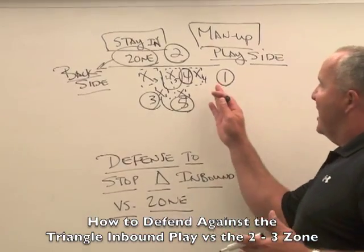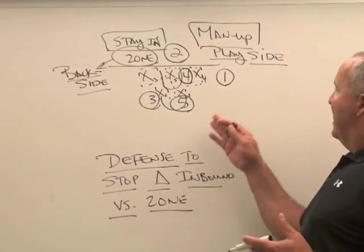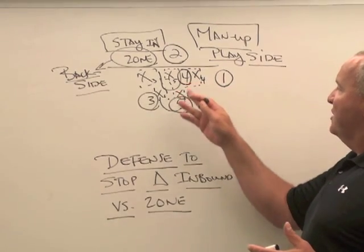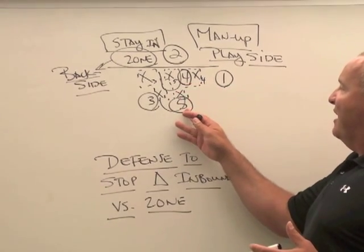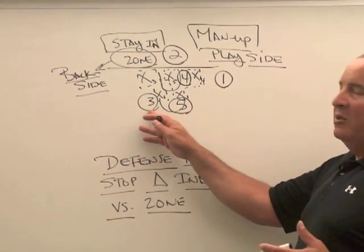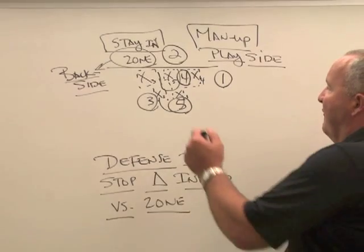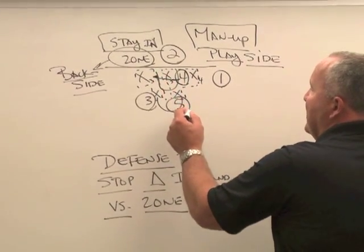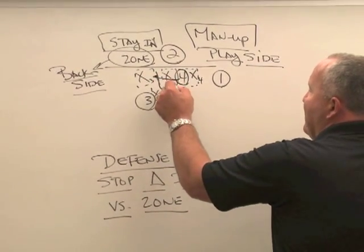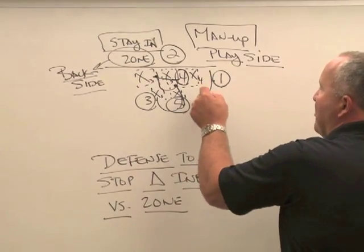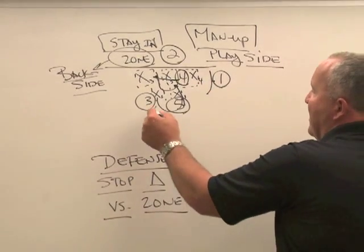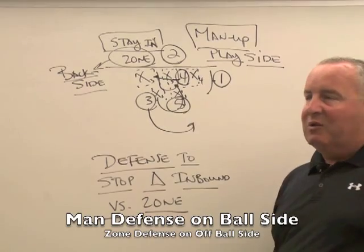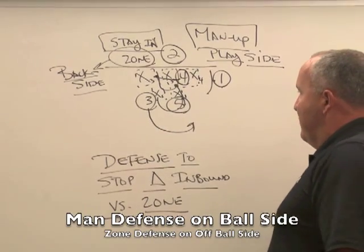On the ball side, remember the offense sets up in the triangle: the 1 in the corner, the 4 at the near block, and the 5 at the elbow, with 3 at the opposite elbow. The 4's job offensively is to go across and reseal, the 5 is to fill, the 1 stays 3-point line extended, and the 3 comes over the top as a safety valve. That was our triangle inbound play — now how would I defend this?